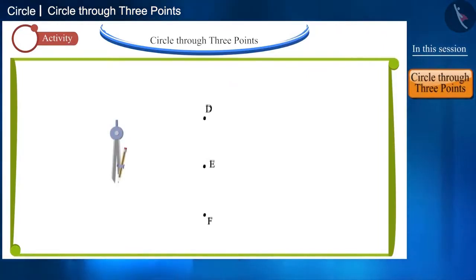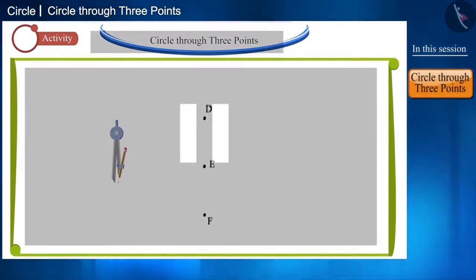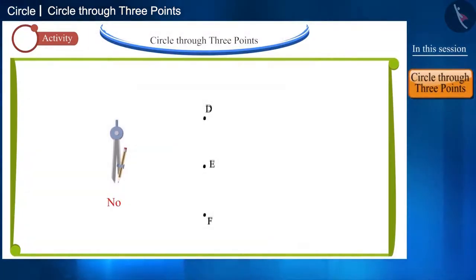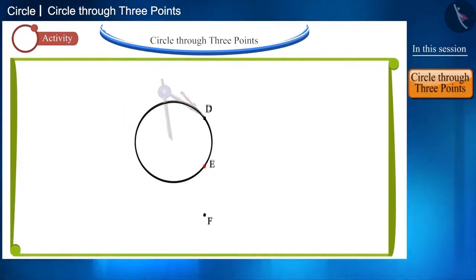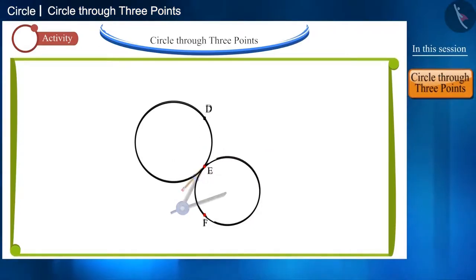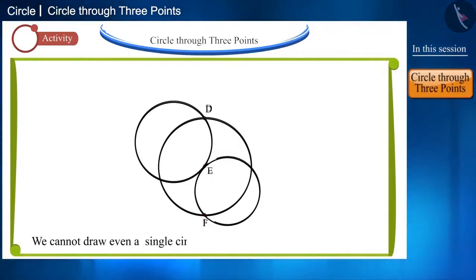With the help of a compass, can you draw a circle passing through these three collinear points D, E and F? You can try to draw a circle by pausing the video. No, because if we draw circles passing through points D and E, then point F is getting left out. If we draw a circle with E and F, then point D is getting left out and if we take points D and F, then point E comes in the middle of the circle. You can see that the third point will always be either inside or outside the circle passing through two points. Therefore, we cannot draw a single circle passing through three collinear points.